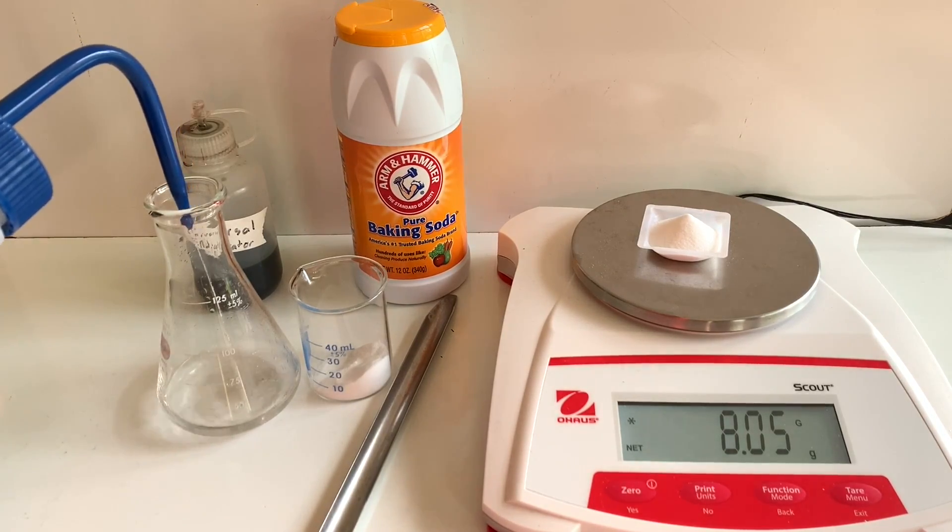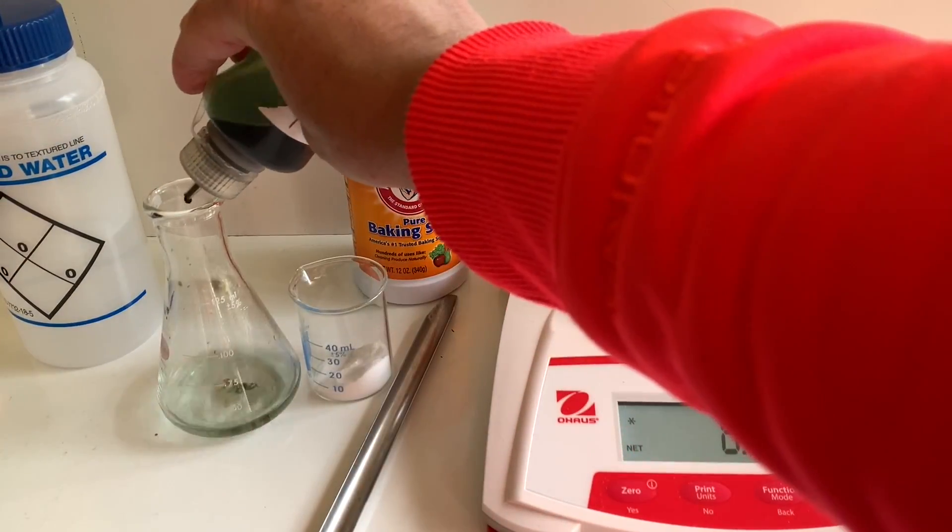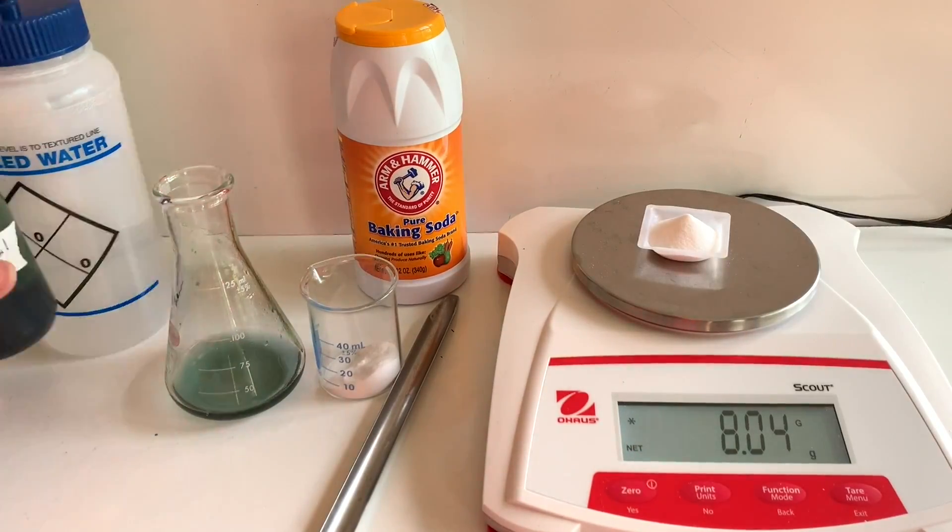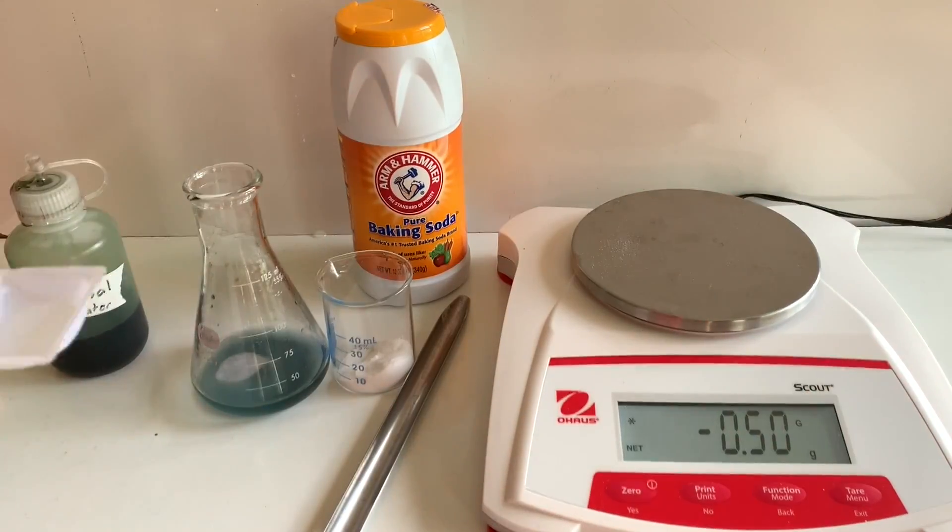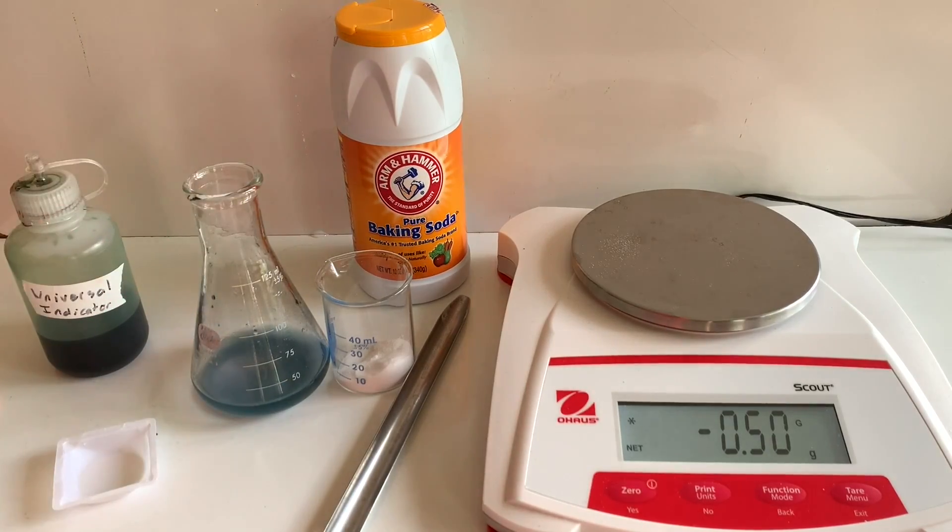I added universal indicator to show that water starts out green, which is neutral, and then when you add the sodium bicarbonate it's turning to a bluish color signifying that sodium bicarbonate is a base.